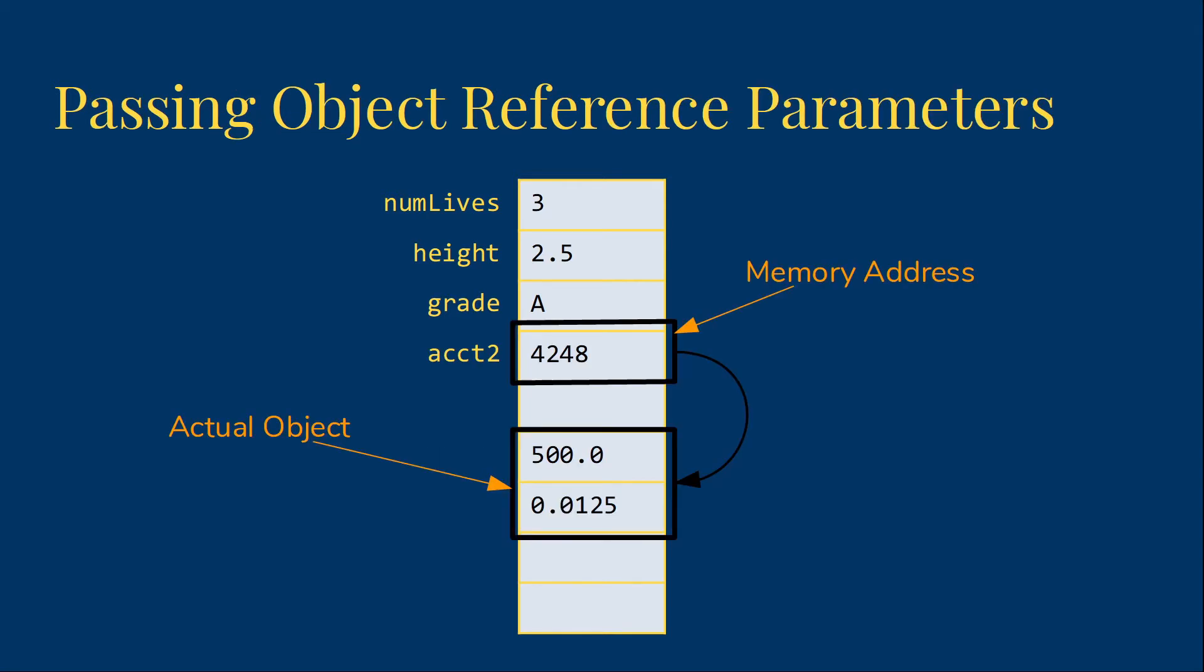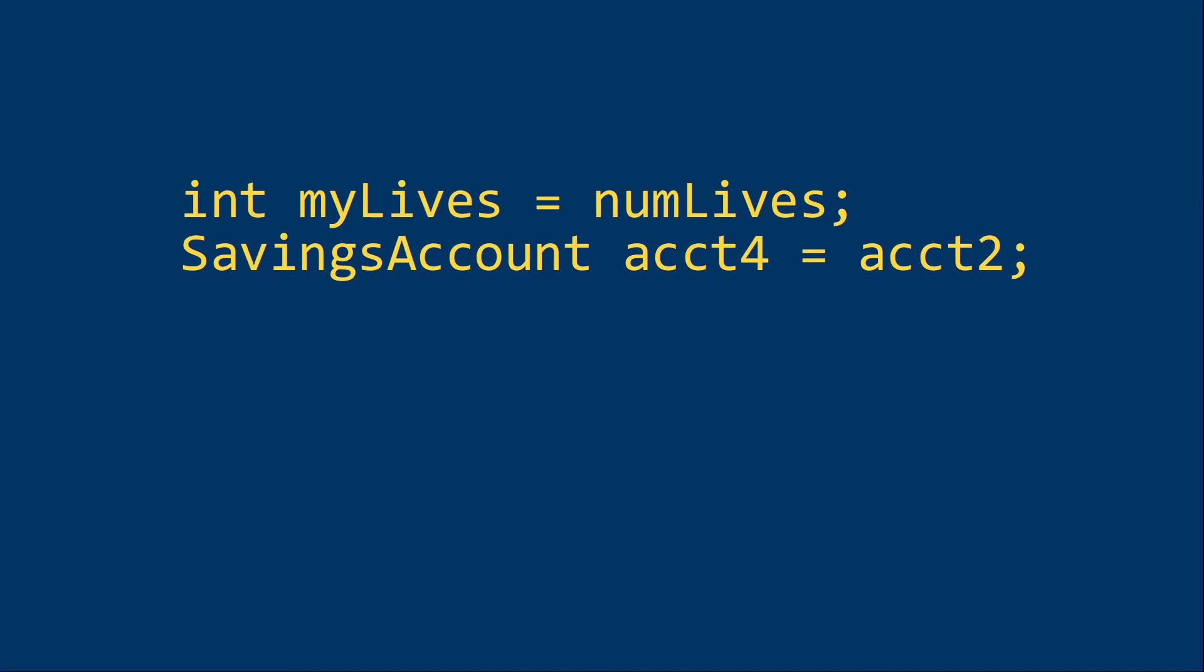What about our objects? Remember that our object variables are object reference variables. So the actual value of the variable is the memory address. So when we do assignment with our objects, we copy the memory address instead of the object itself.